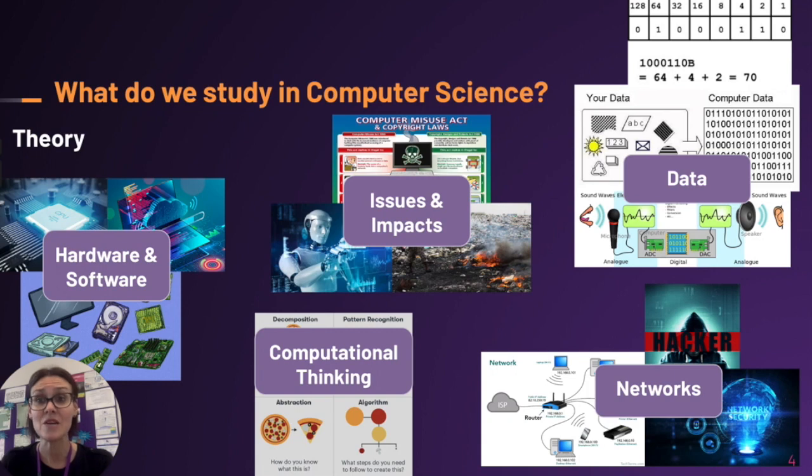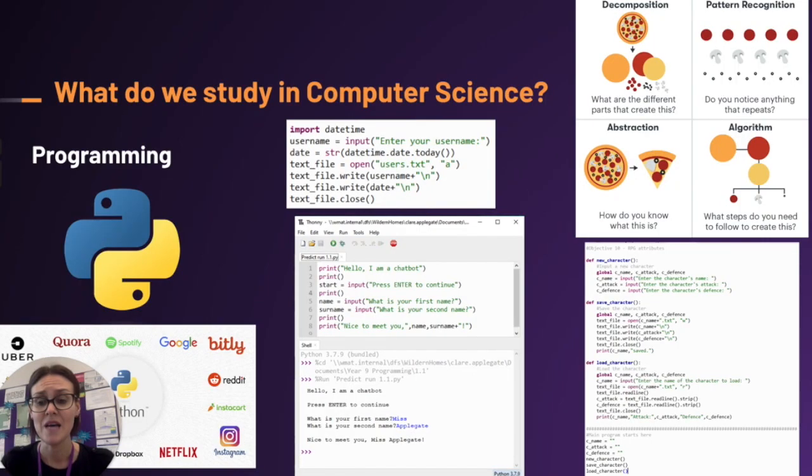We look into binary data representation, computational thinking—looking at algorithms such as flowcharts, abstraction, decomposition—and then networks, understanding network security and computer networks in general. That's the first paper.